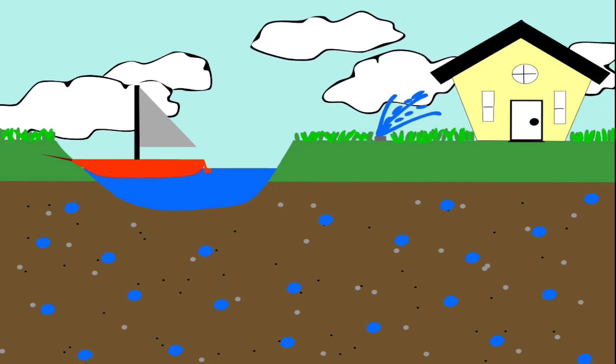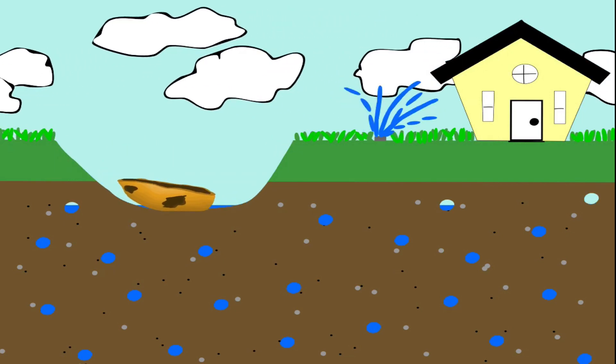As water is pulled from the aquifer, water levels drop just like it does for a surface lake.